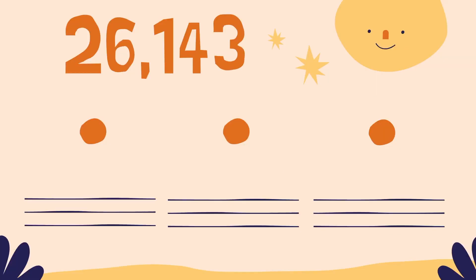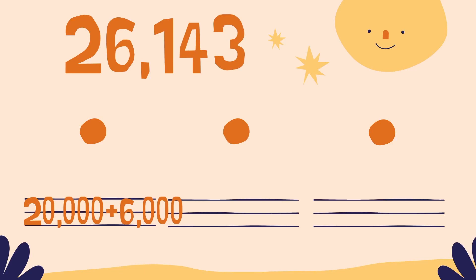Try this one: 26,143. What would that look like in expanded form? Well, we've got a 2 in the ten-thousands spot, so that's worth 20,000. A 6 in the thousands place, so that would be 6,000. A 1 in the hundreds place, so that's 100. A 4 in the tens place, 40. Plus 3 in the ones place, plus 3.